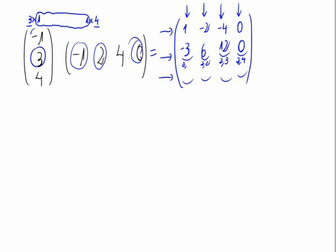Finally, the third line has value 4, so: 4 times minus 1 equals minus 4; 4 times 2 equals 8; 4 times 4 equals 16; and 4 times 0 equals 0. This is the result of multiplying the two given matrices.